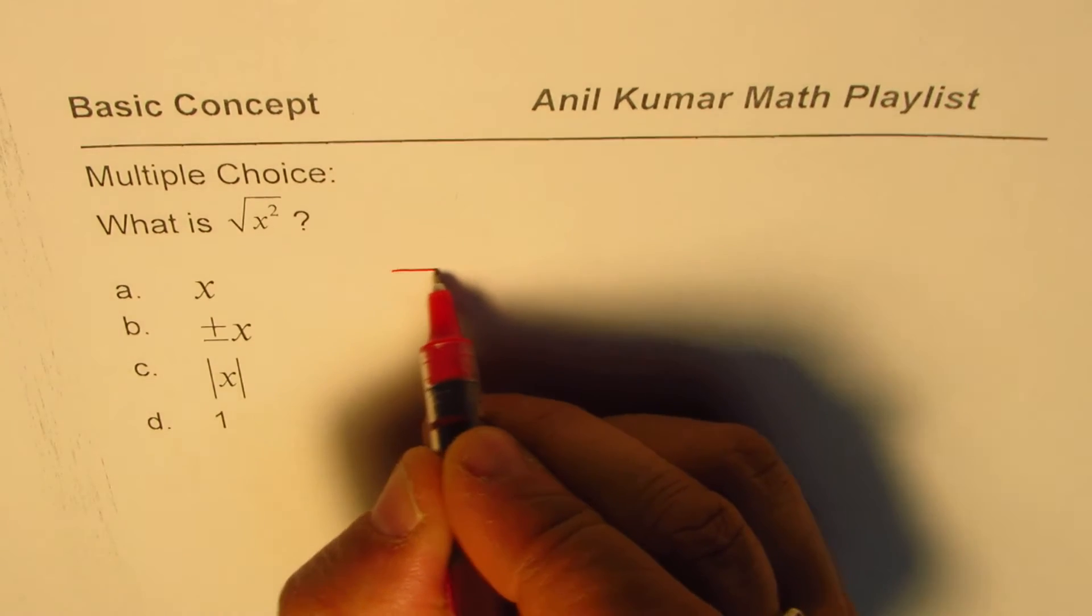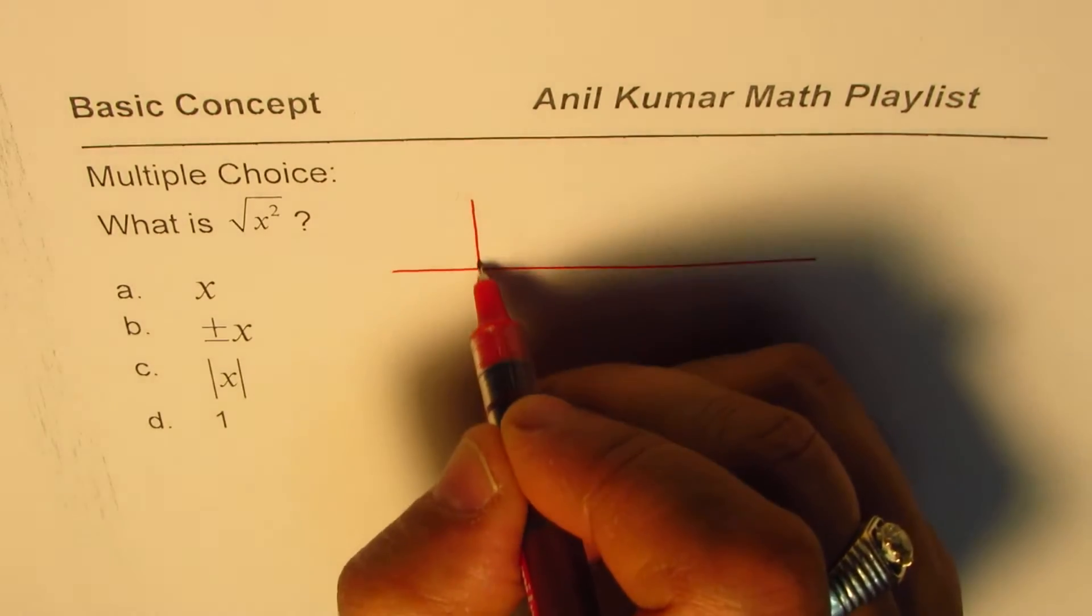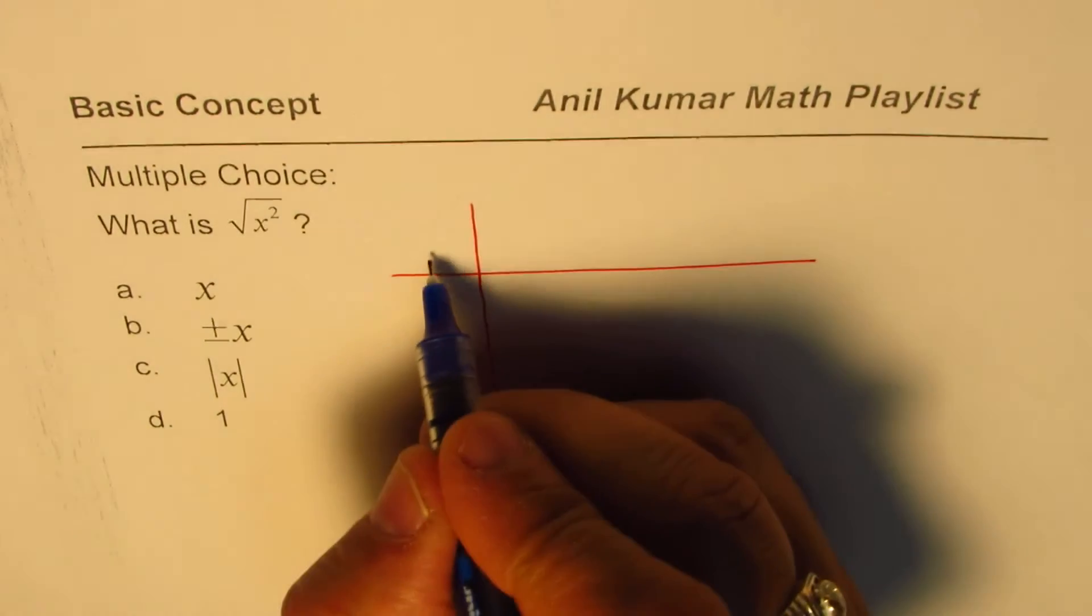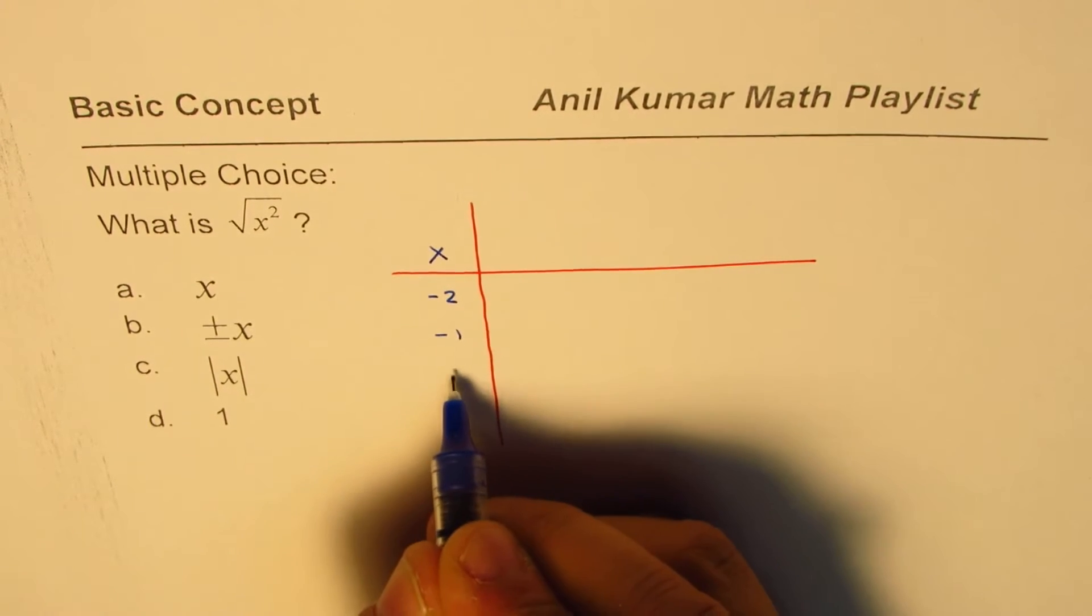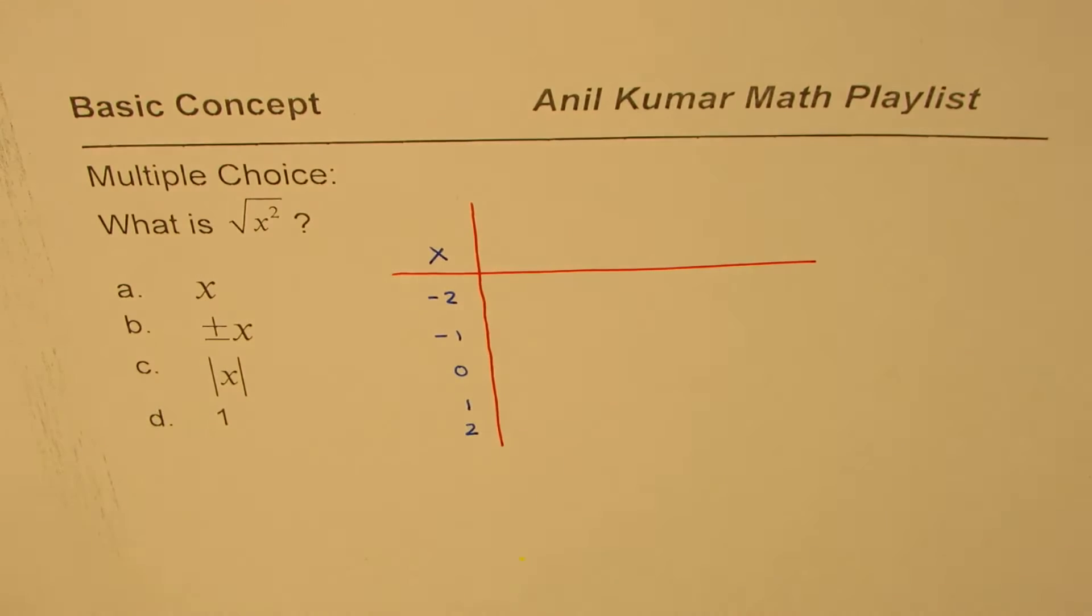Well, let's make a table of values and figure it out. If I take a few values of x, good values to take are minus 2, minus 1, 0, 1, and 2.